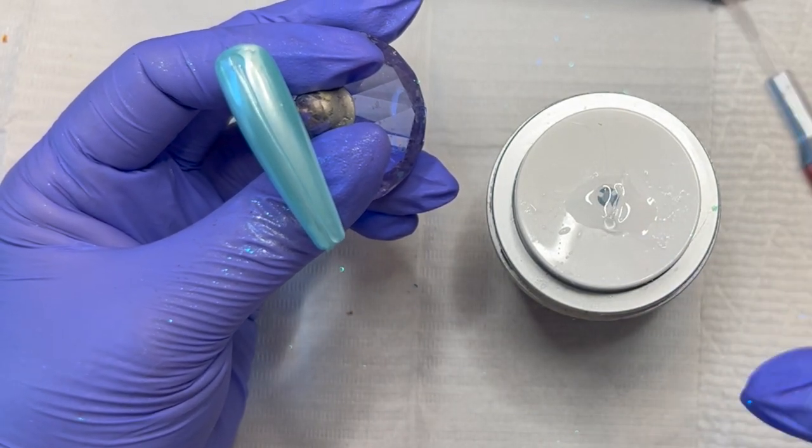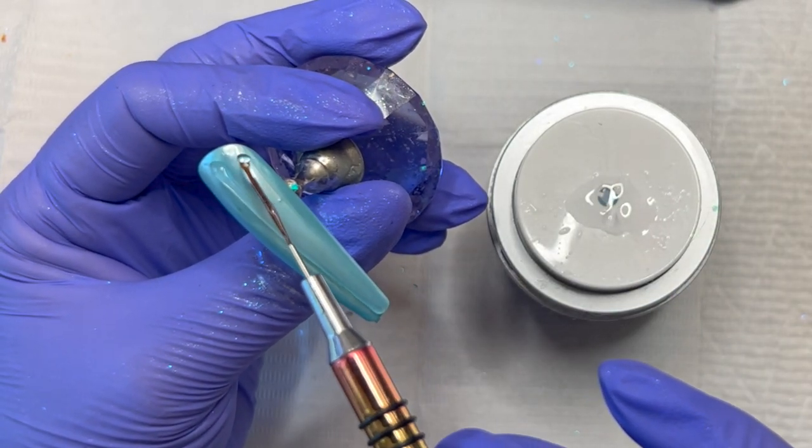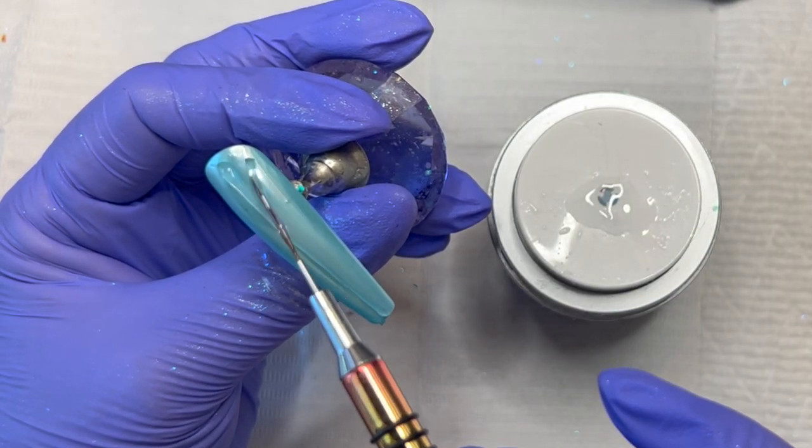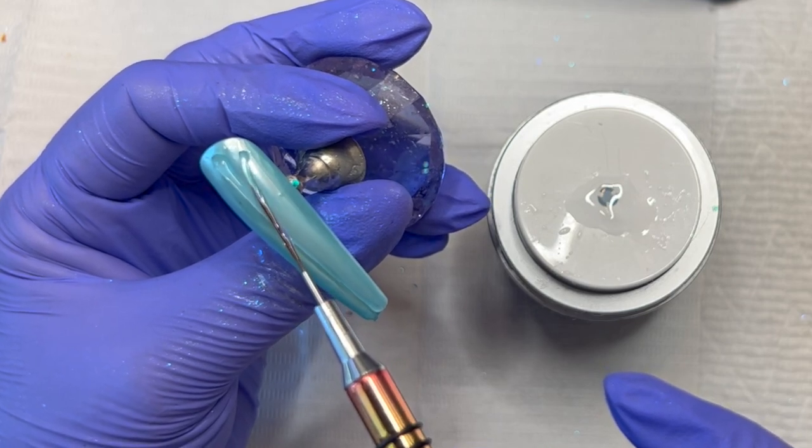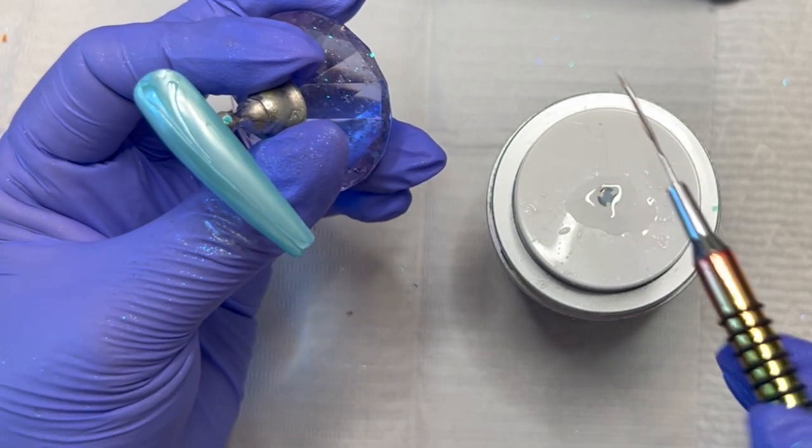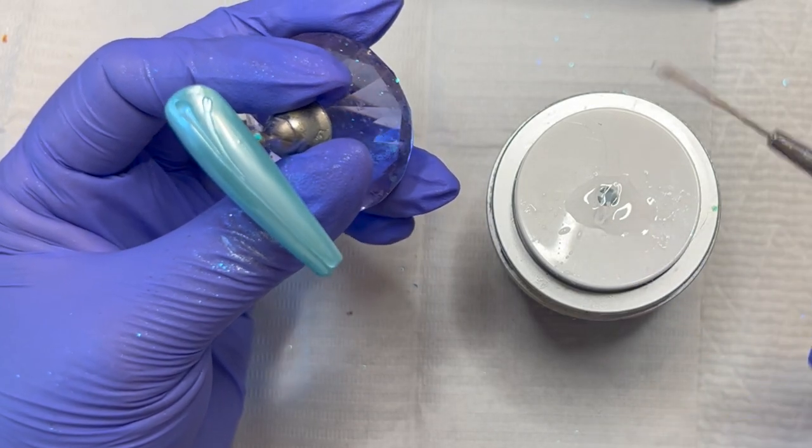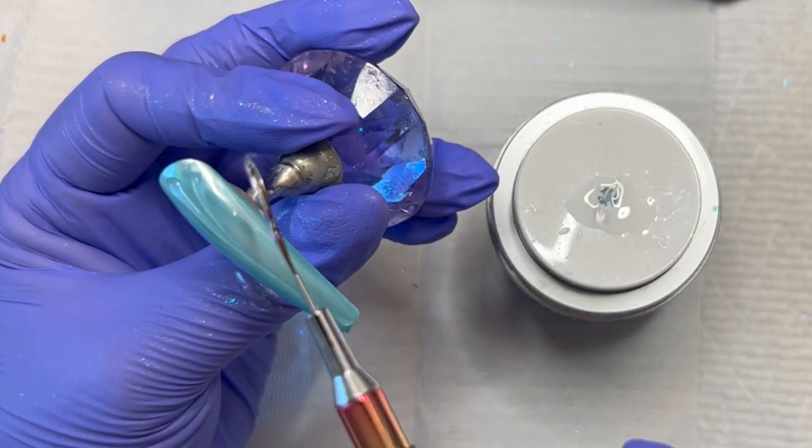And then you're going to do the same on either side. Now this is a little bit longer of a nail than I've seen it done on. I'm just going to curve the line, so it does look a little odd. It looked odd with the one that I did the other day as well.